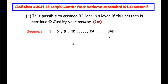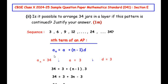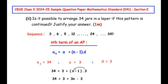For this we use the nth term of an AP formula: aₙ = a + (n−1)×d. Here aₙ = 34, a = 3 (the first term), n is the layer number we need to find, and d = 3 (common difference from the previous question). Plugging in the values: 34 = 3 + (n−1)×3. Expanding the bracket gives 3n − 3.